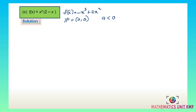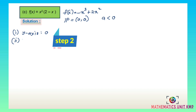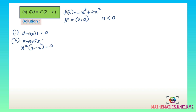To sketch the cubic graph, first find the y-intercept, which is at 0. Then find the x-intercepts from x²(2 minus x) equals 0, giving x equals 0 and x equals 2.